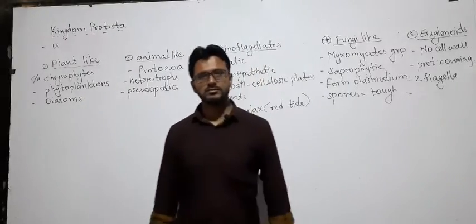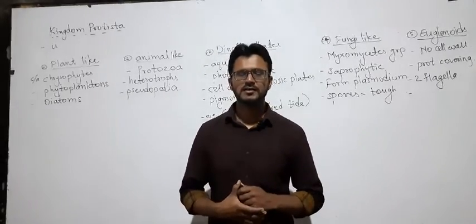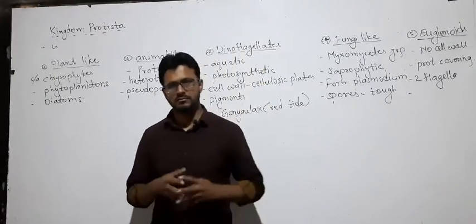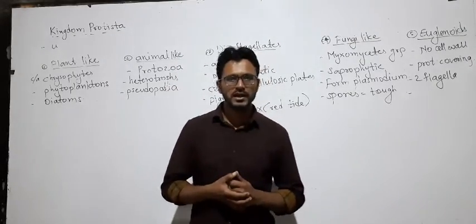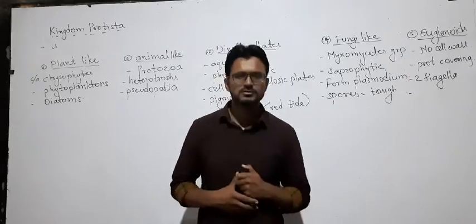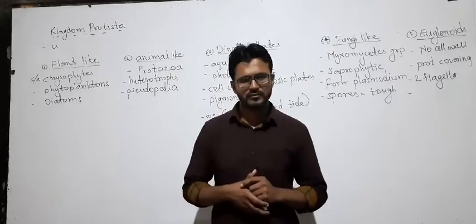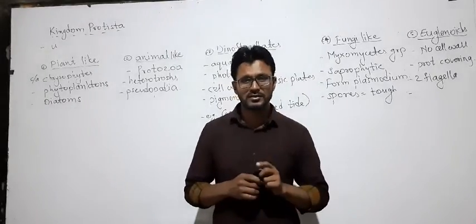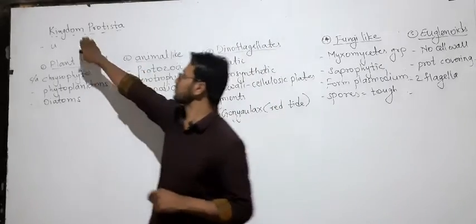Welcome to the new video students. Today we are going to see the next kingdom - Kingdom Protista. In the previous class I told you regarding the properties of Kingdom Monera, in which we saw different bacteria. Kingdom Monera ke andar bhi unicellular organism present hain - ek cell ke bane organism waha bhi present hain, aur ek cell ka organism yaha bhi present hai.